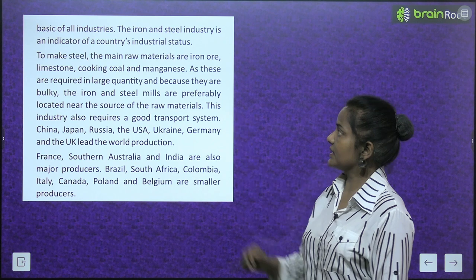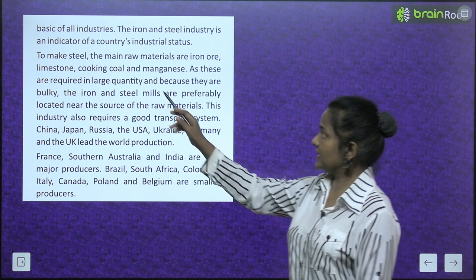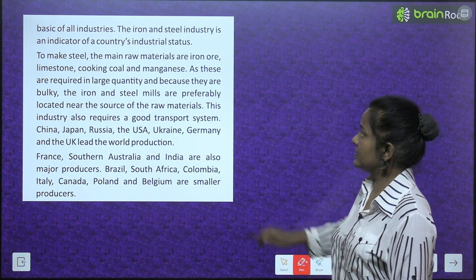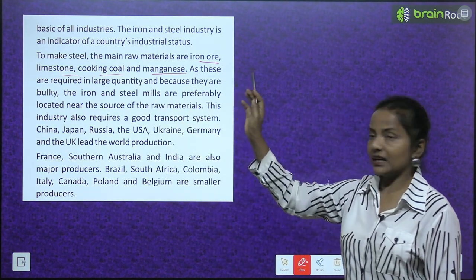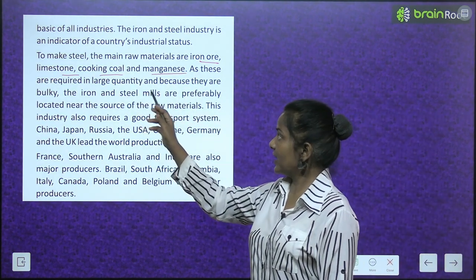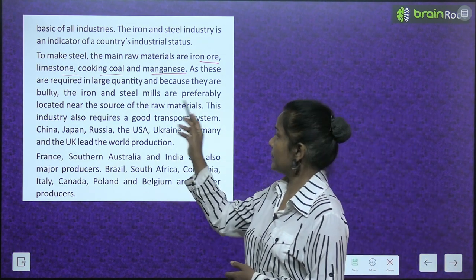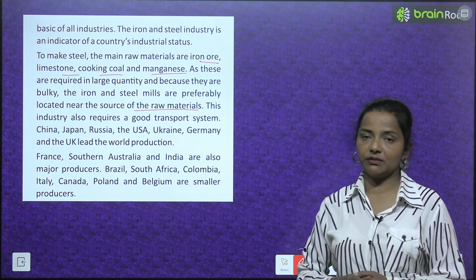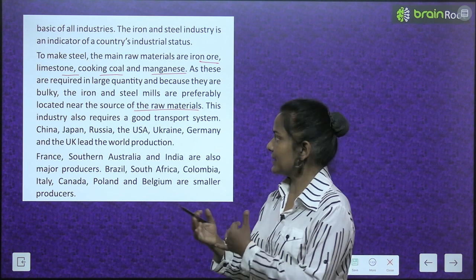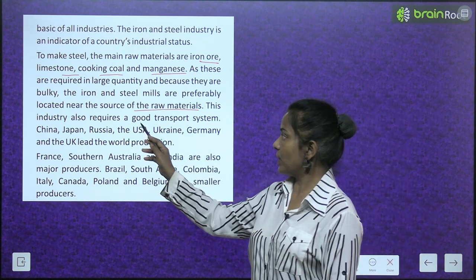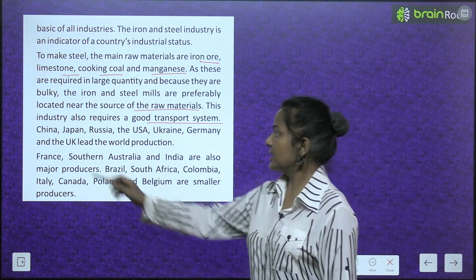The iron and steel industry is an indicator of a country's industrial status. To make steel, the main raw materials are iron ore, limestone, coking coal and manganese. As these are required in large quantity and are bulky, iron and steel mills are preferably located near the source of raw materials. This industry also requires a good transport system.